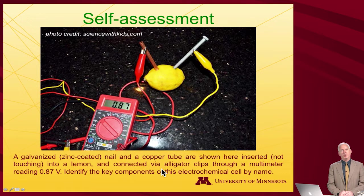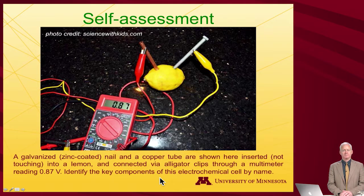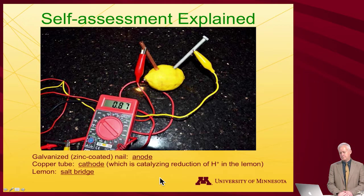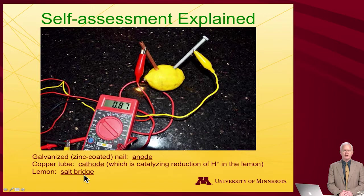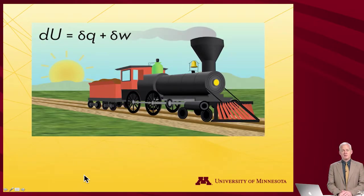Here is a do-it-yourself at-home electrochemical cell: stabbing into a lemon a galvanized nail, which acts as zinc, and a copper tube, connected to a multimeter. The zinc continues to be the anode and the copper tube is the cathode. It's not reducing copper sulfate — there's no copper sulfate in a lemon. It's actually reducing the protons, present because a lemon is very acidic, to hydrogen gas. The lemon itself serves as the salt bridge or electrolyte solution. That completes our definitional tour through electrochemical cells; next we'll talk about potential and electromotive force.